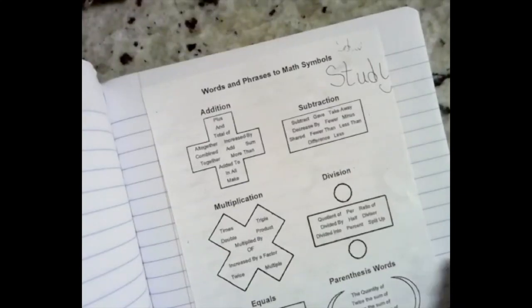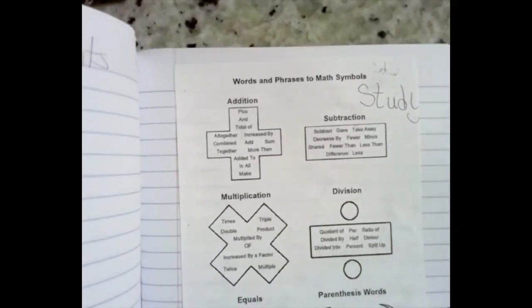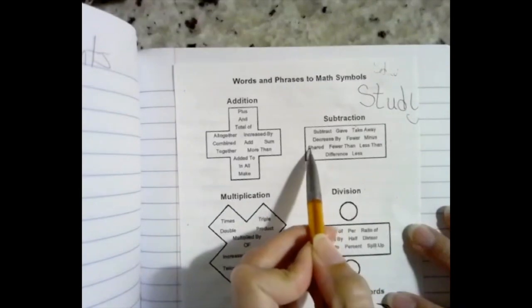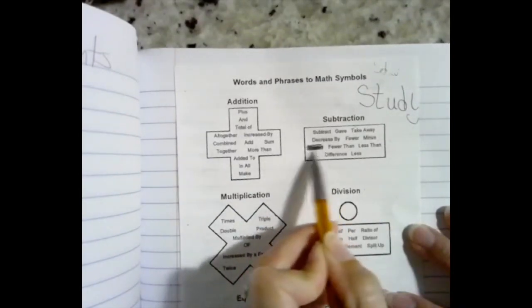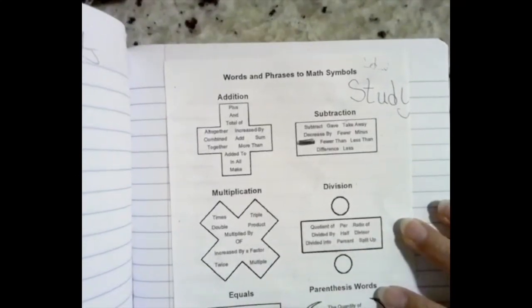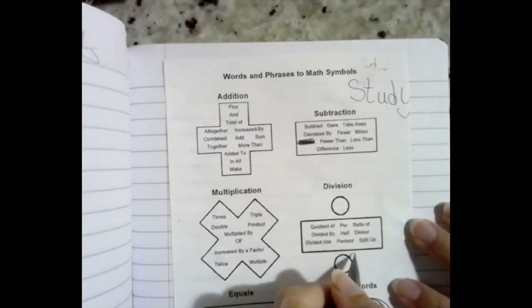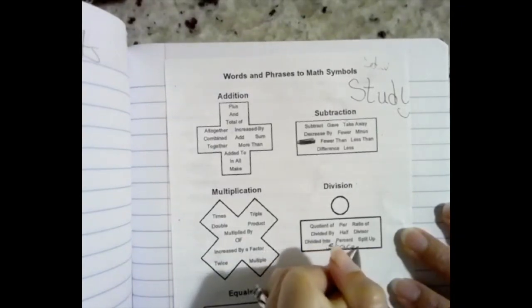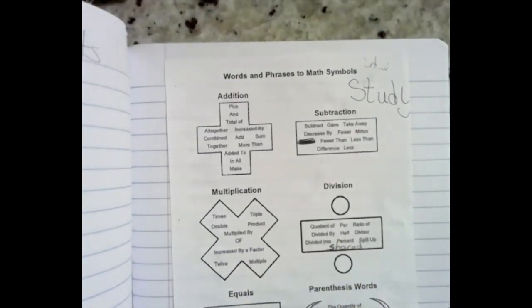So there are a couple of changes that I want to make onto this journal page. The first one is right here, this word shared. They have it in subtraction, but shared really is not a subtraction word. You need to cross off the word shared there just like I did, and you need to put division. Whenever you're sharing something, like if you have a candy bar and you share it with three people, you're dividing the candy bar. If you have a pizza and you're sharing it with six people, we're dividing that pizza. So that's why we want to make sure that we put shared on the division sign.